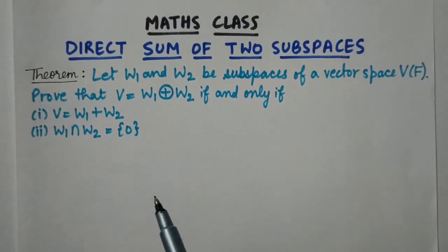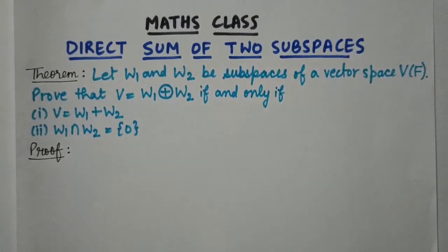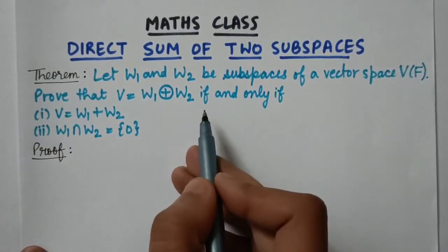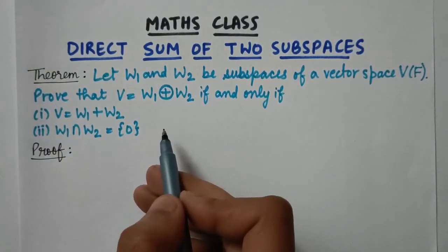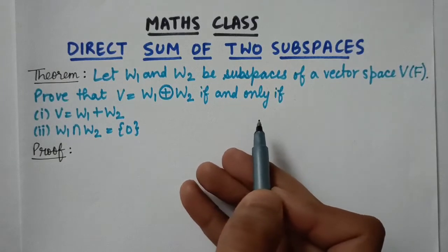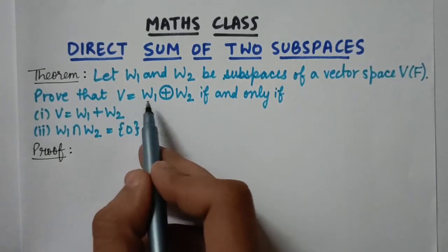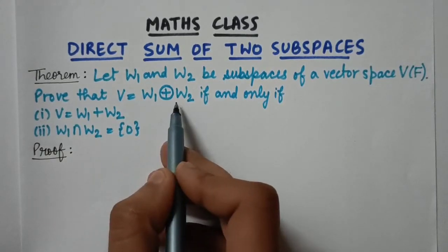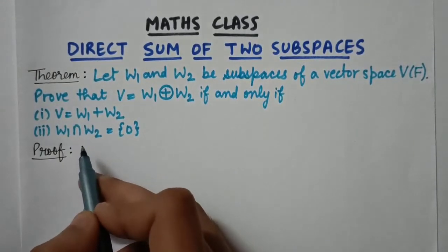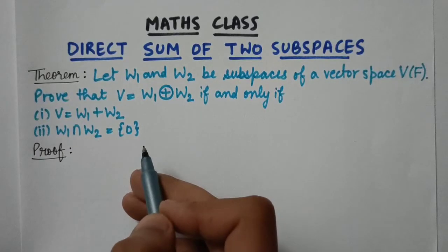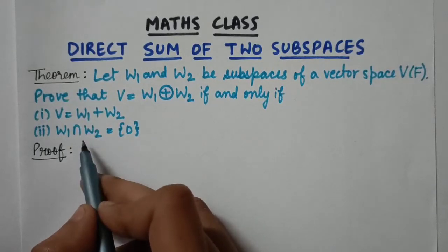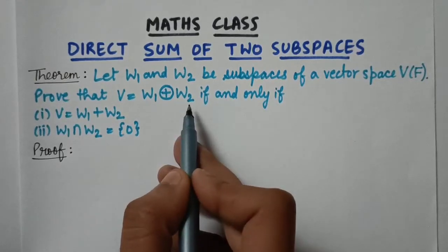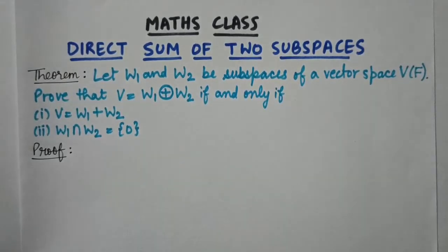Now let's begin to prove this theorem. Since the statement contains 'if and only if,' we have to prove this theorem in two parts. In the first part, we consider that v equals the direct sum of w1 and w2 as given, and we prove that the two conditions are true. In the second part, we consider those two conditions as given and prove that v is the direct sum of w1 and w2.